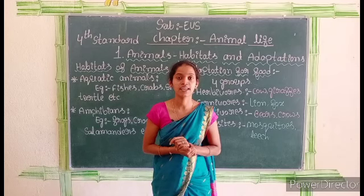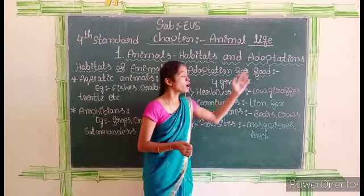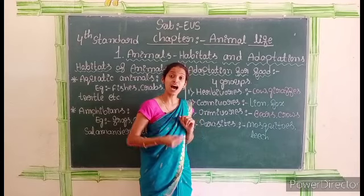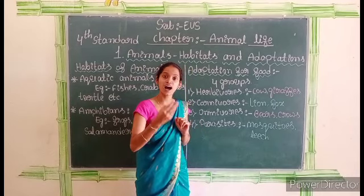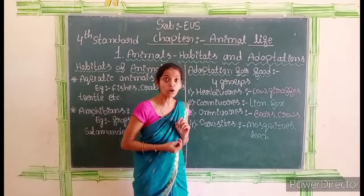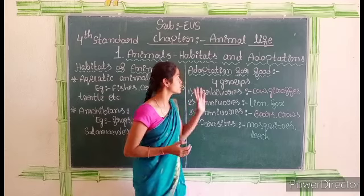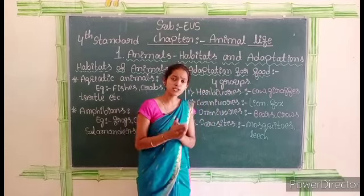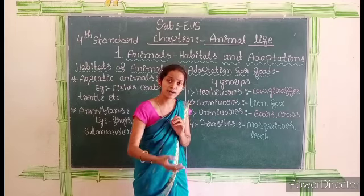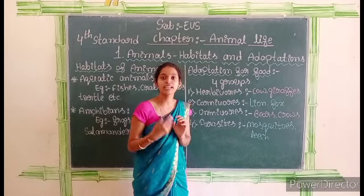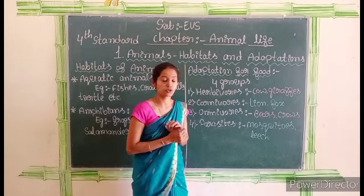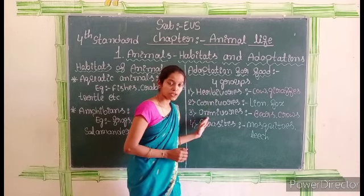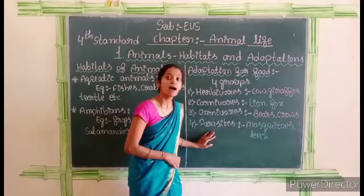Adaptation — the adaptation for food. Based on the type of food the animals eat, animals can be divided into four groups: herbivores, carnivores, omnivores, and parasites.